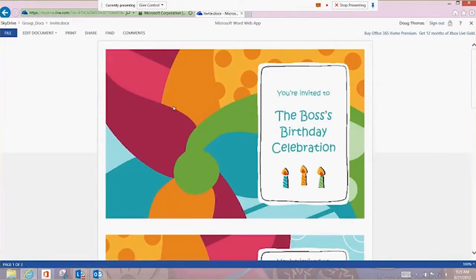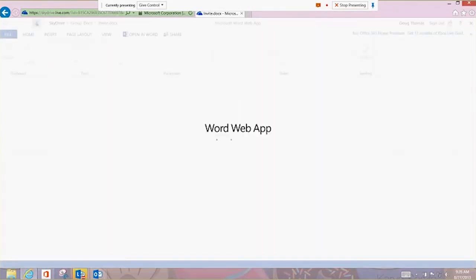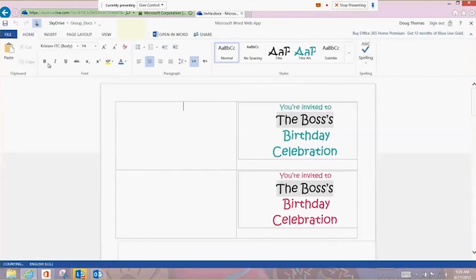So usually what would happen here is it would say the two people are sharing the document. I can edit the document in the web app. Dave, we can be in the document at the same time. You can do this in Excel. You can do this with other folks.